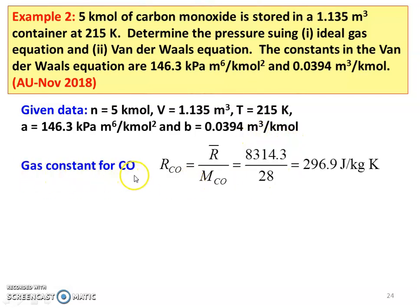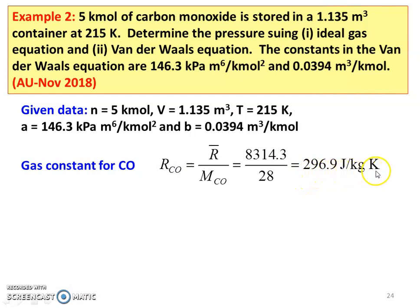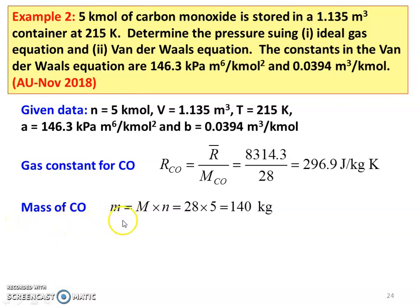The gas constant for CO: R_CO equals R-bar divided by M_CO. R-bar is the universal gas constant. Molecular weight of carbon monoxide is 28 (carbon = 12, oxygen = 16, so 12 + 16 = 28). Therefore, R_CO = 8314.3 divided by 28 = 296.9 joules per kilogram Kelvin. Mass of carbon monoxide: M = molecular weight × number of moles = 28 × 5 = 140 kg.